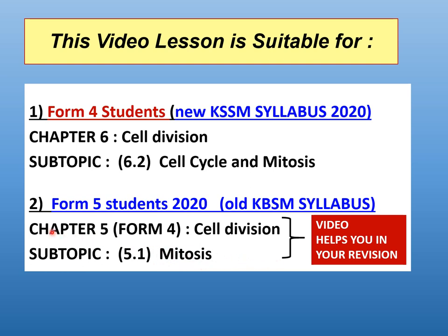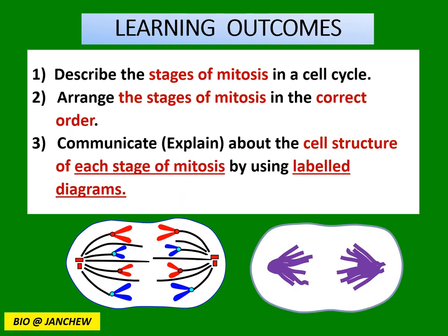This video will help you in your revision for the exam. The learning outcomes for today's lesson are as follows. After this lesson, you should be able to describe the stages of mitosis in a cell cycle — that is the stages of prophase, metaphase, anaphase, and telophase. Number two, you should be able to arrange the stages of mitosis in the correct order, especially when given a set of pictures of the different stages.